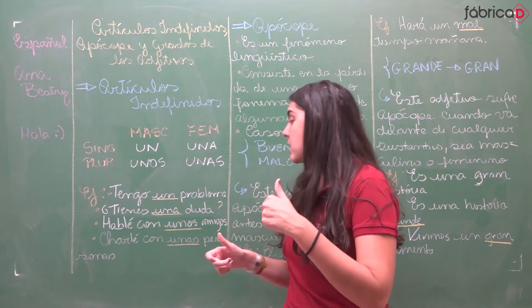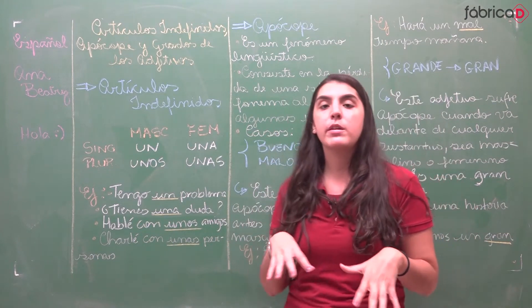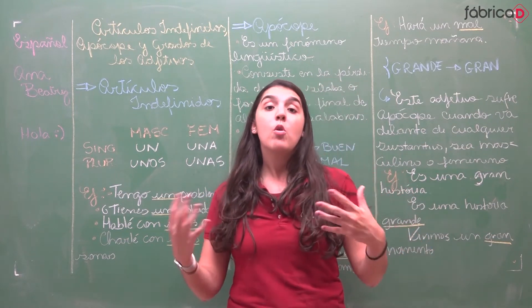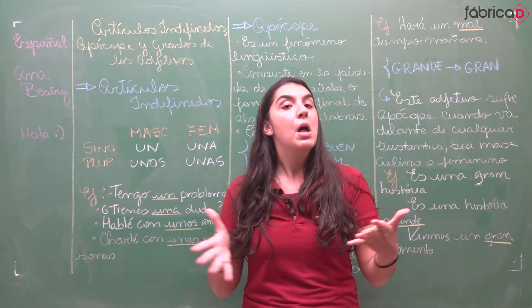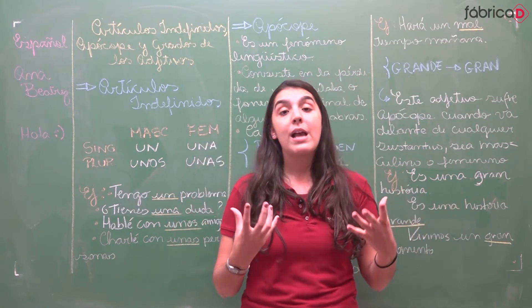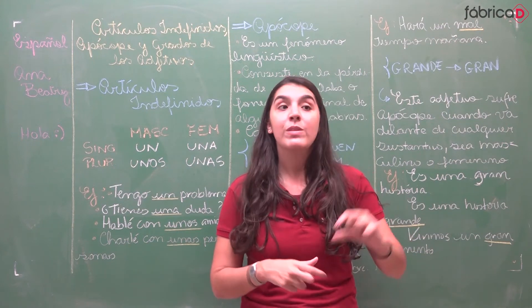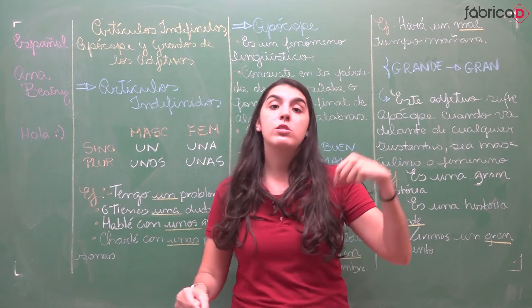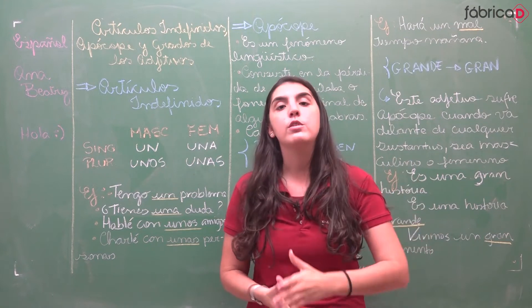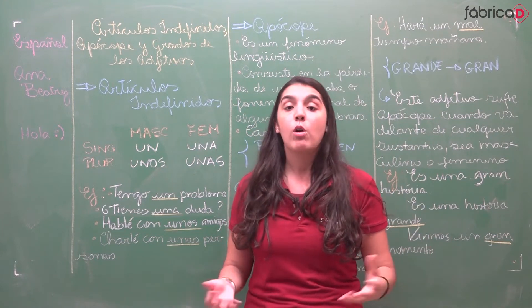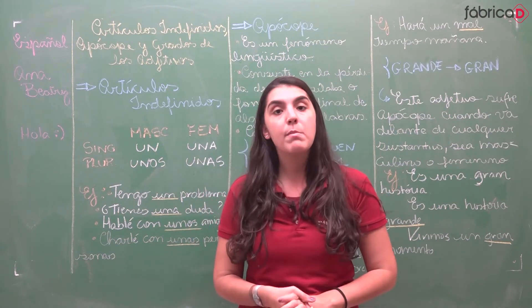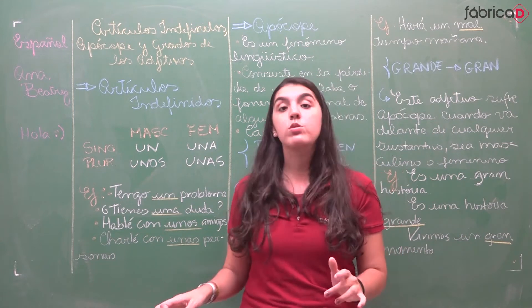'Hablé con unos amigos' — eu falei com uns amigos, com alguns amigos. Quais amigos foram? Não sei, não posso determinar com clareza, com certeza quais amigos foram. Mas se eu falo 'hablé con los amigos del edificio', os amigos são os amigos do edifício, do condomínio. Então, quando eu uso o artigo 'los', eu consigo determinar de fato quais são os amigos. Aqui com 'unos', eu não consigo.